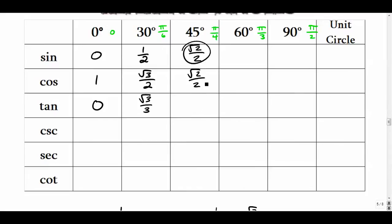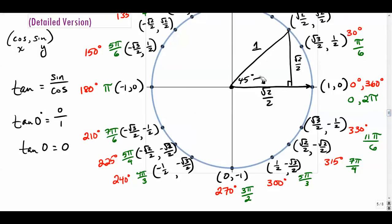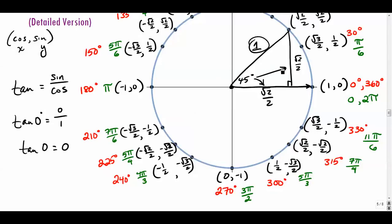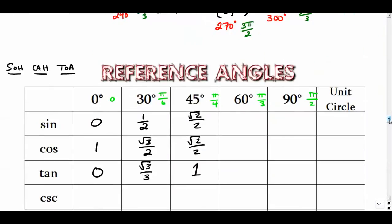The tangent of 45° is sine divided by cosine, which equals 1. Tangent is always opposite over adjacent, which is why it's defined as sine over cosine. In the unit circle it's especially nice because the hypotenuse is 1, so sine is just the opposite side and cosine is just the adjacent side.